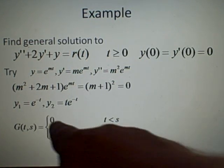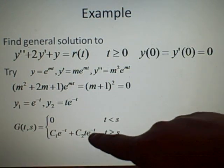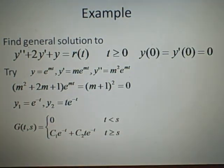Right, so now that we've got this equation here, we've got the g(t,s), we've got this here. But we want to get rid of these constants to make it easier, more simplified.